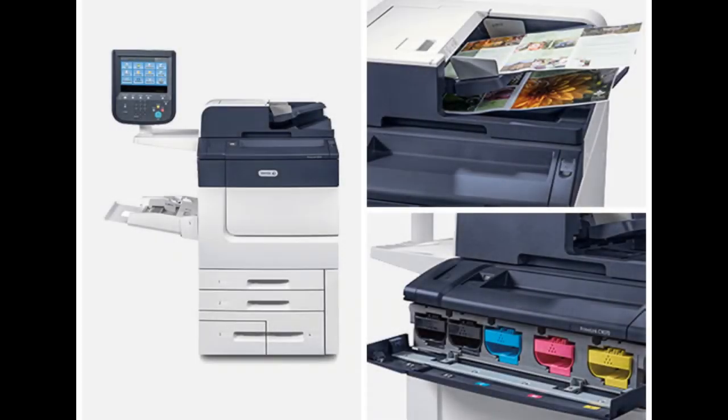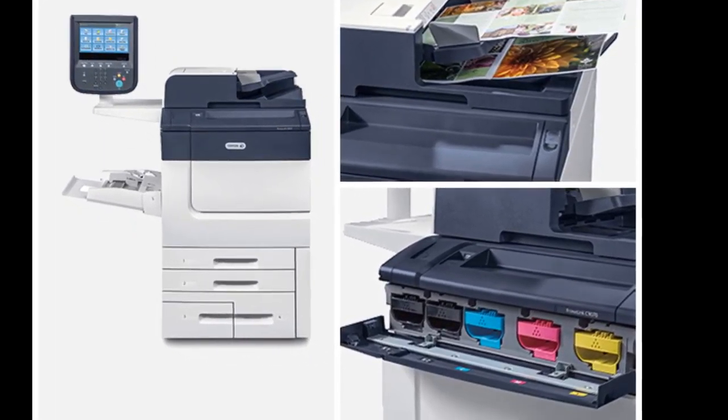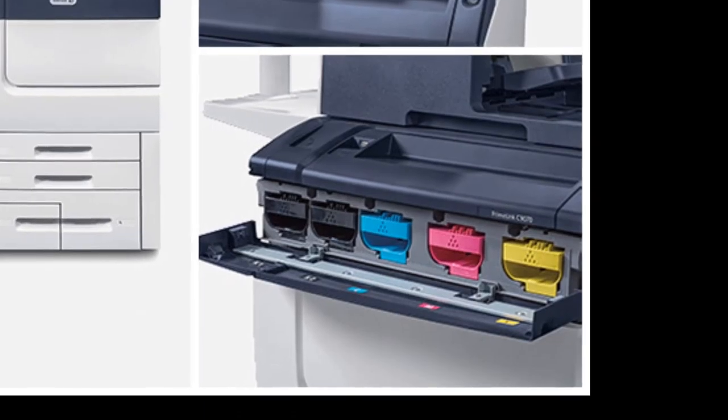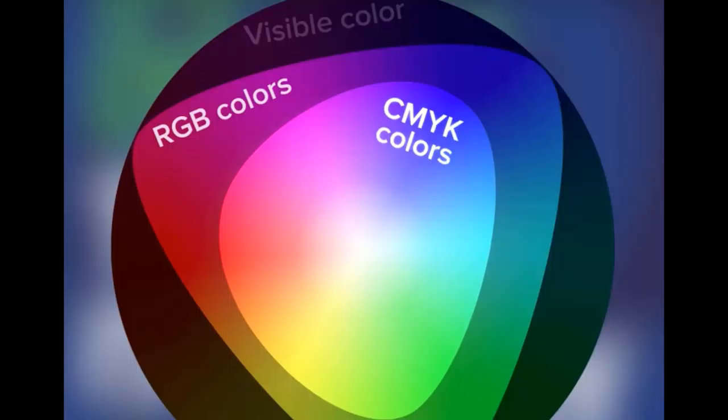For color printing, there are four drums: cyan, magenta, yellow, and key or black, giving us a CMYK color space or color gamut. The toner is then melted or fused through the paper using heat.